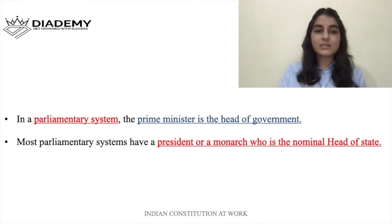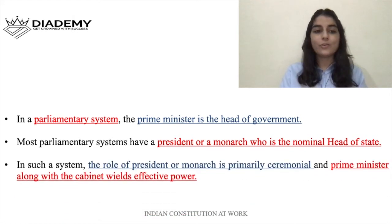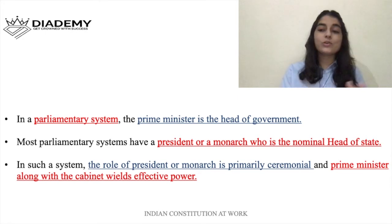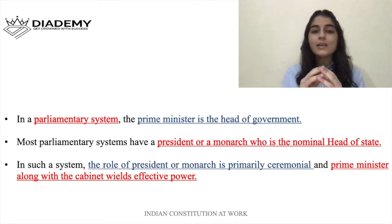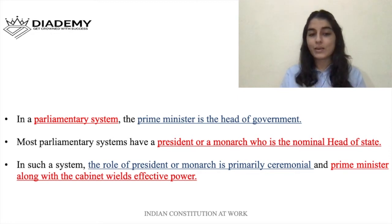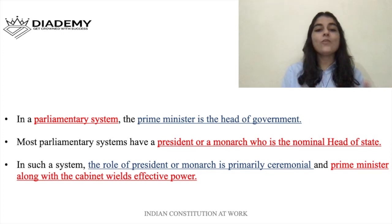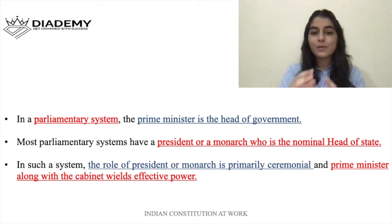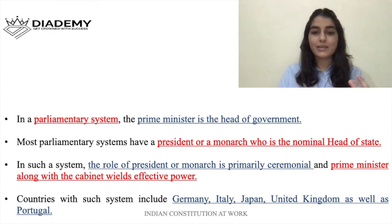Most parliamentary systems have a president or monarch who is the nominal head of state, and their role is primarily ceremonial. They have no real power or real influence. Whereas the Prime Minister, along with the cabinet, wields effective power — the real power lies with the Prime Minister and his cabinet ministers. Countries with this parliamentary system include Germany, Italy, Japan, UK, and Portugal.